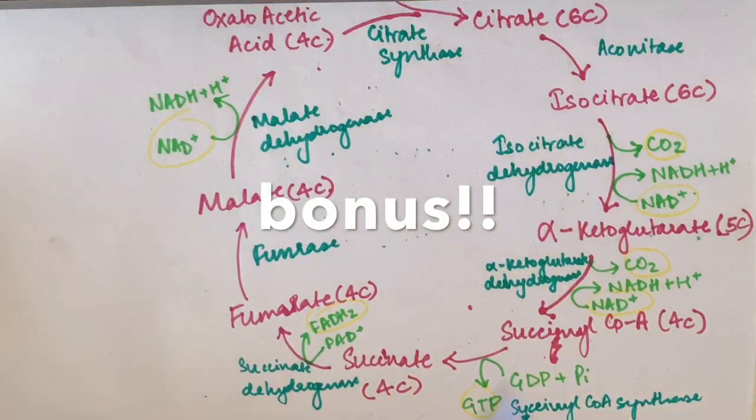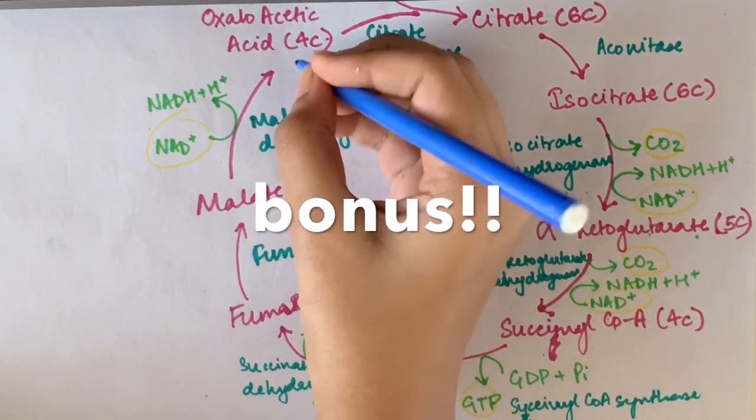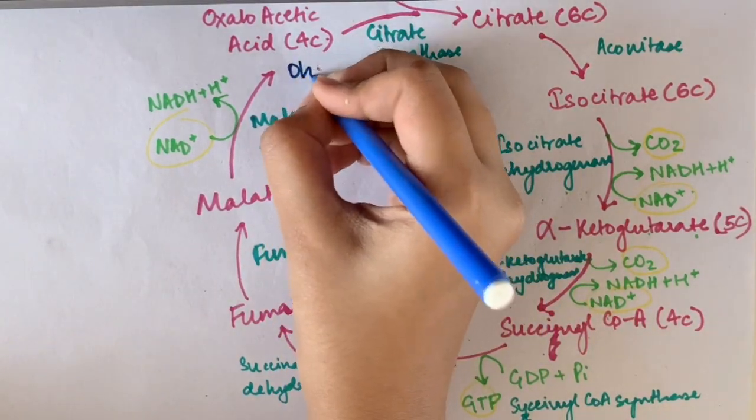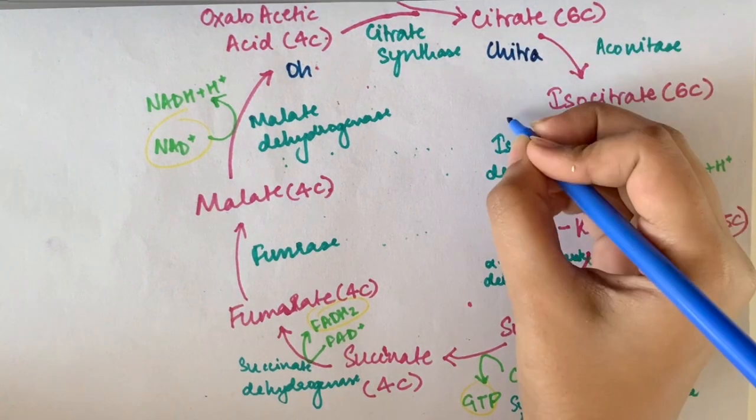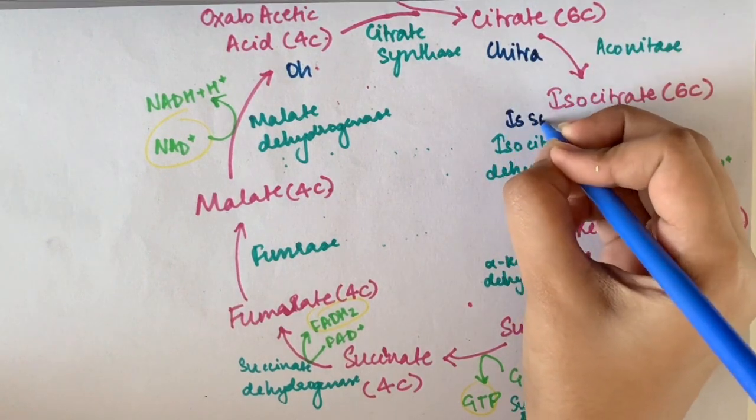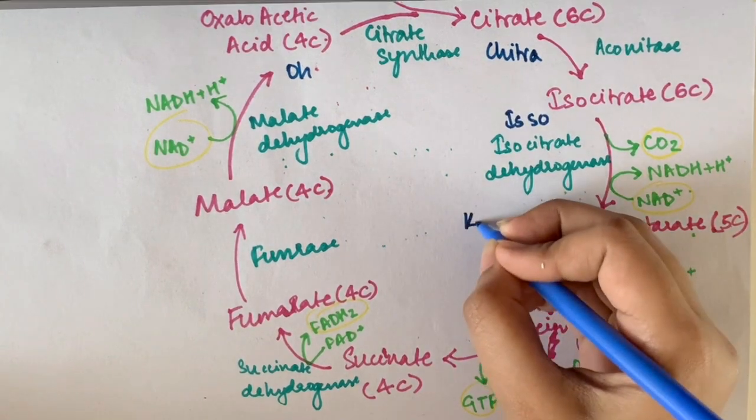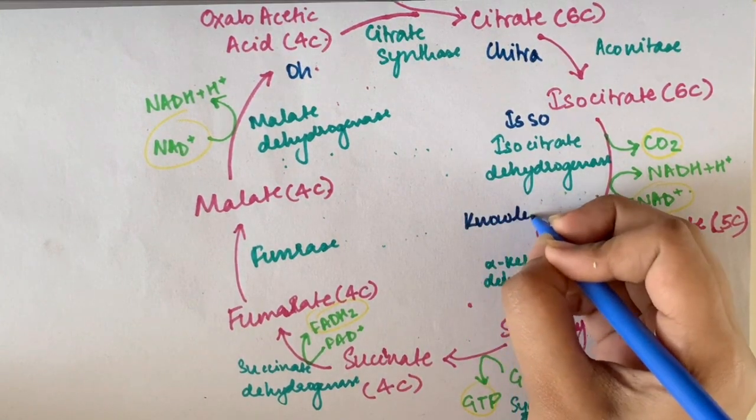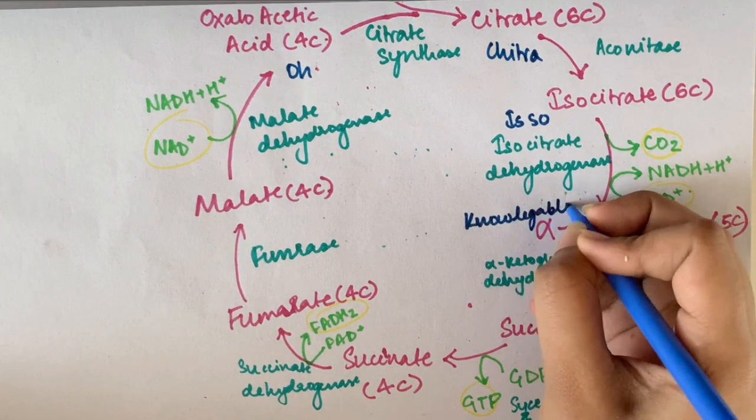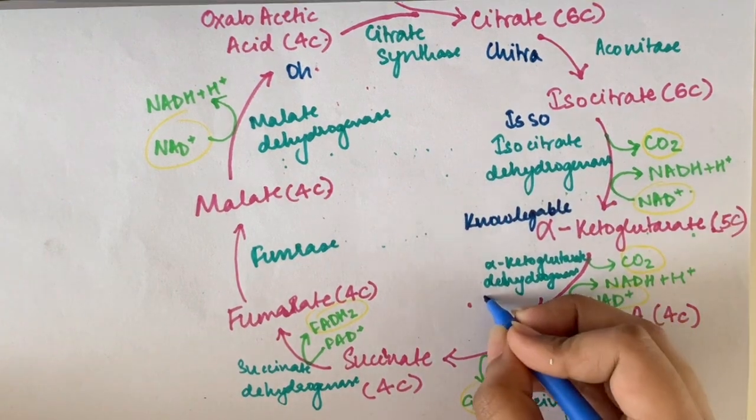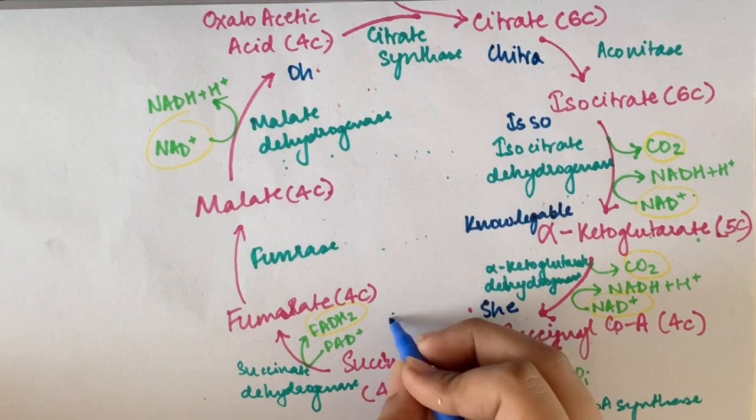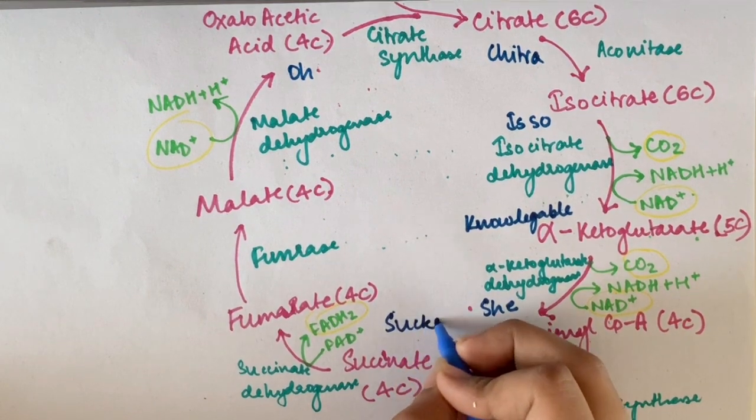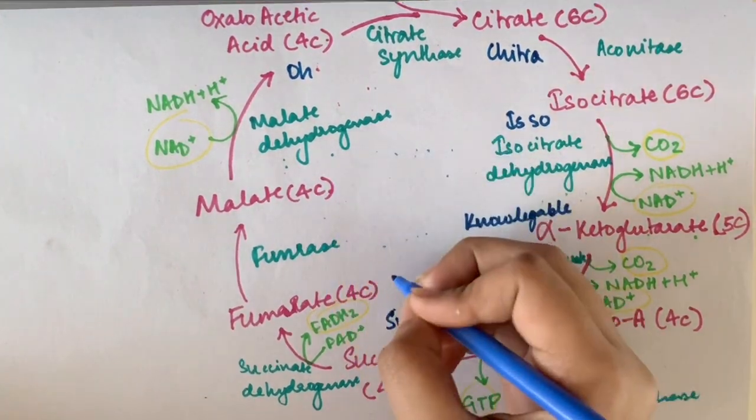Here is a small bonus for you all. This is a mnemonic I made on my own. It goes like: Oh Chitra is so knowledgeable she sucks failing maths. Basically it means she is so knowledgeable that she almost sucks at failing mathematics. I don't know how that makes sense, but it made sense to me and I hope it helps you too.